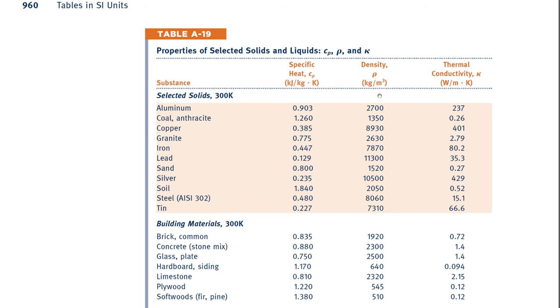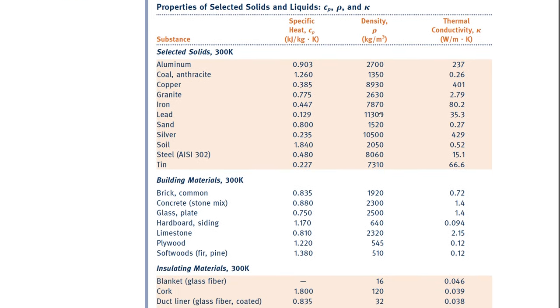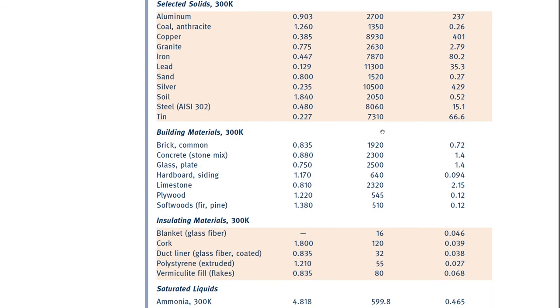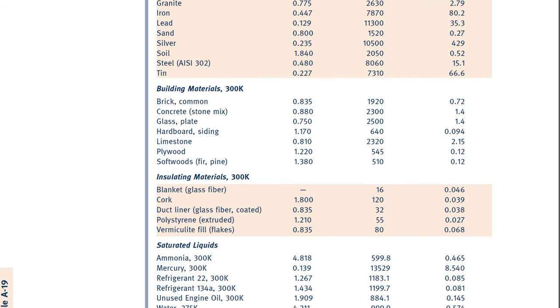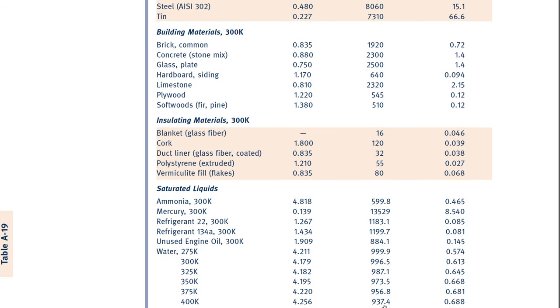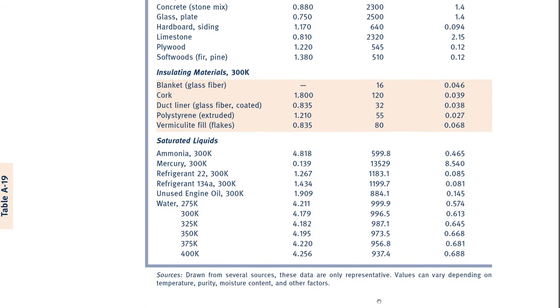The density of water is going to be this column right here. And if we scroll on down to our water, we have a variety of different densities. That's because the density of water is going to vary as a function of temperature. Which temperature do we want?